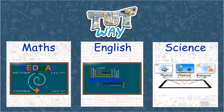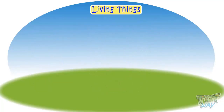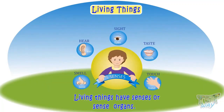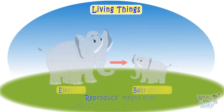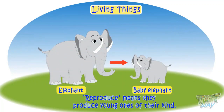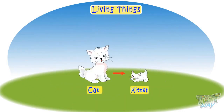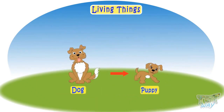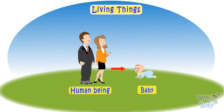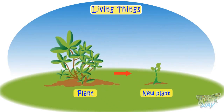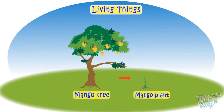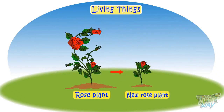They have senses or sense organs. Reproduce means to produce young ones of its kind. Like cats give birth to small kittens, dogs give birth to small puppies, and humans give birth to small babies. Plants too reproduce plants of their own kind. The seed of a mango tree will produce a mango tree, and the seed of a rose flower plant will produce a new rose flower plant.